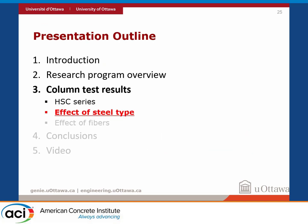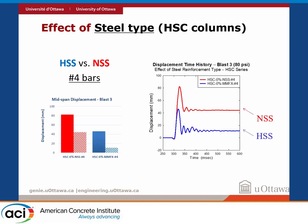Now let's look at the effect of steel type. What we found consistently is that if we take a high-strength concrete column and replace the bars with high-strength bars at the same bar area, we get an important improvement in performance. Here's the column with normal-strength steel versus the one with high-strength steel using No. 4 bars — you can see maximum displacement goes down, and residual displacement is very low. You're getting almost elastic behavior, whereas the normal-strength steel column shows quite a bit of damage.